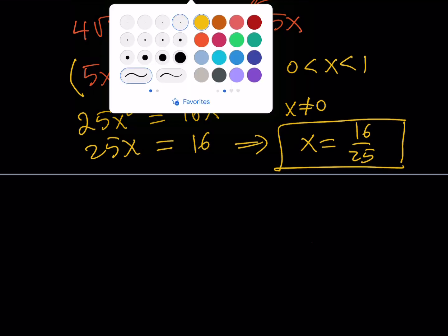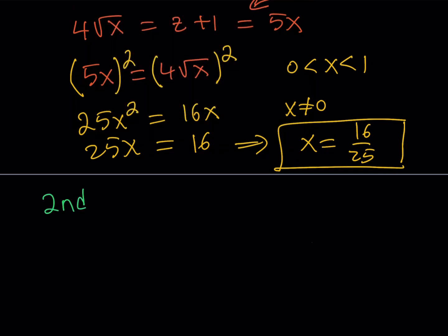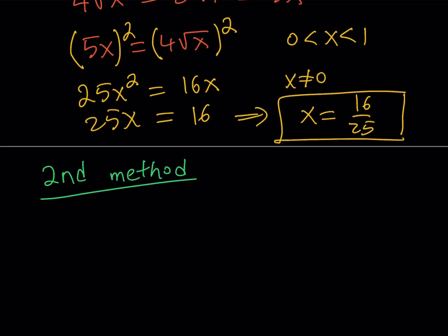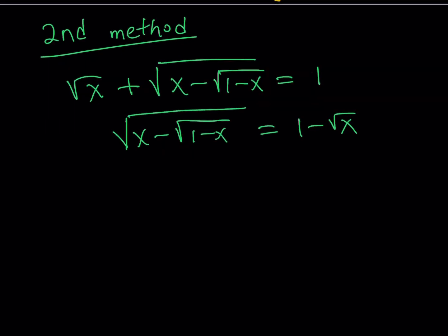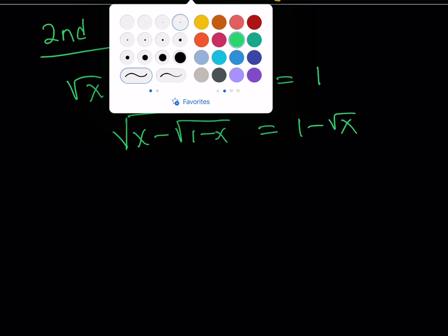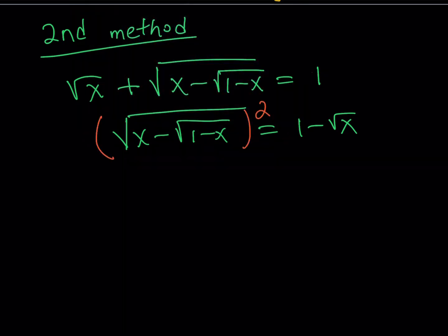Now here's the second solution method, which involves the usual squaring both sides. Our original problem is: square root of x plus square root of (x minus square root of (1 minus x)) equals 1. I'll isolate one radical on the left-hand side and put the other radical on the right-hand side, then square both sides. I haven't worried about the domain here because I'll check solutions at the end.